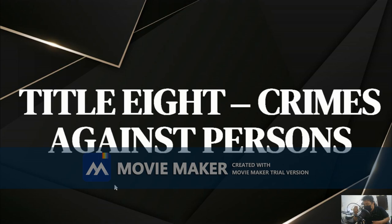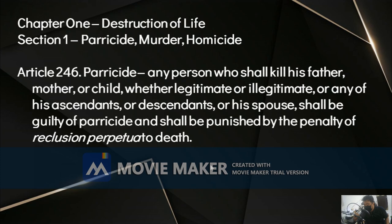The first category is destruction of life: parricide, murder, and homicide. First is parricide. Any person who shall kill his father, his mother, or child — whether illegitimate or legitimate — or any of his ascendants or descendants, or his spouse, shall be guilty of parricide and shall be punished by reclusion perpetua to death.